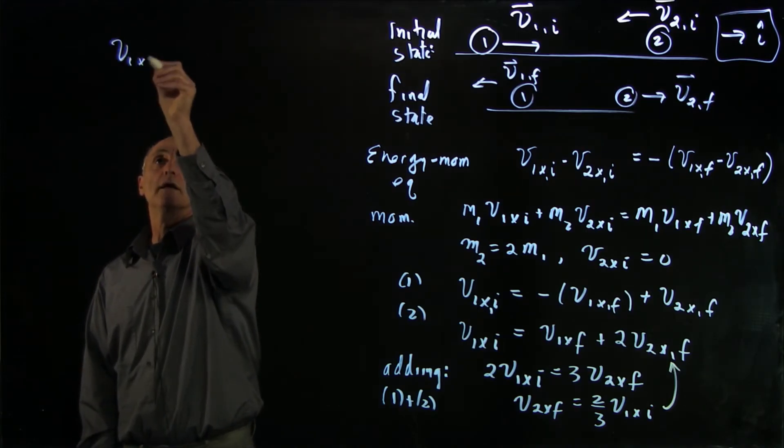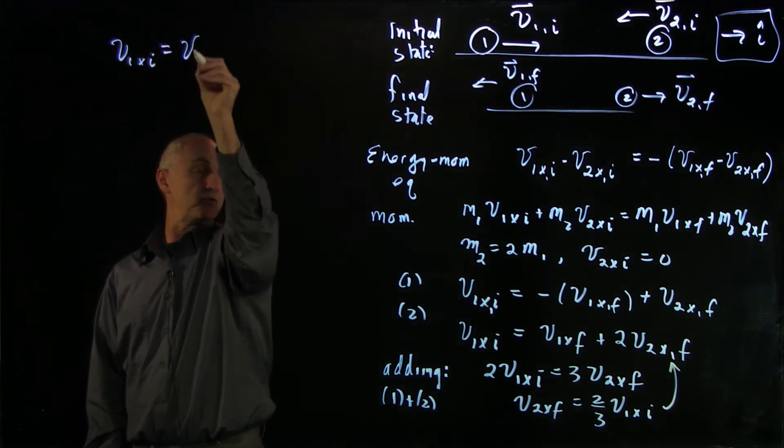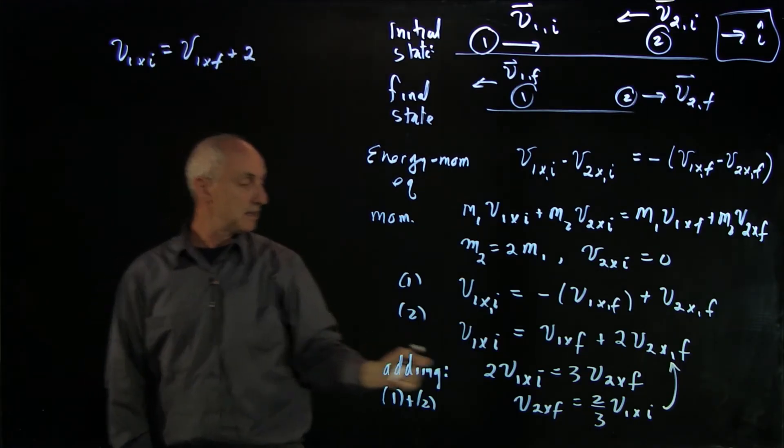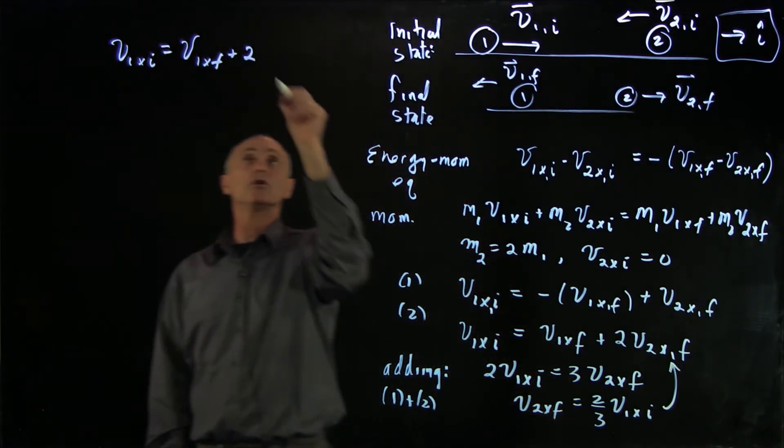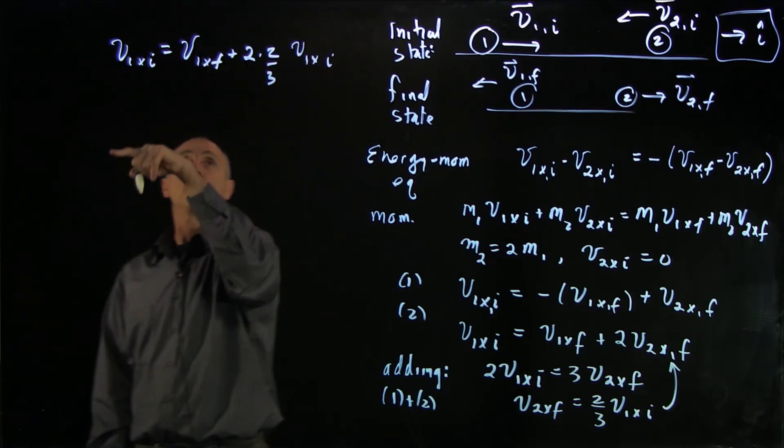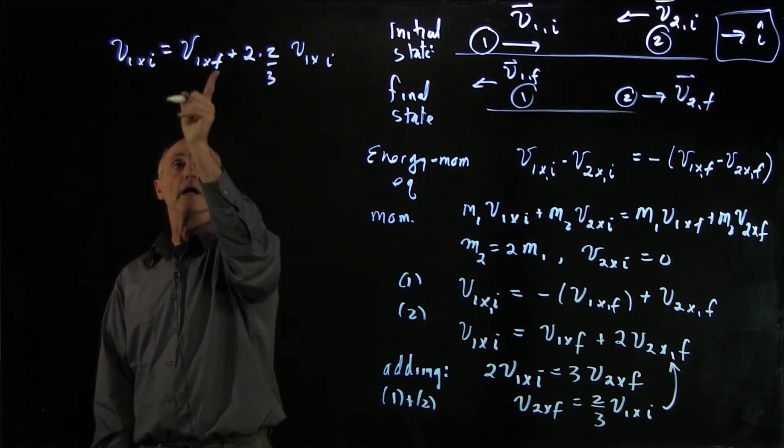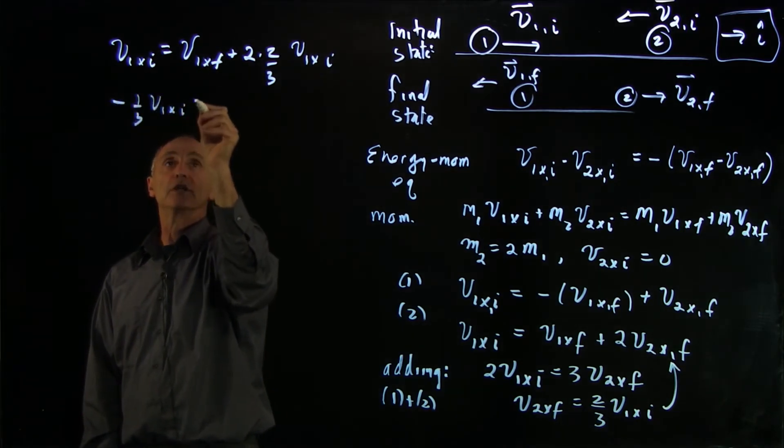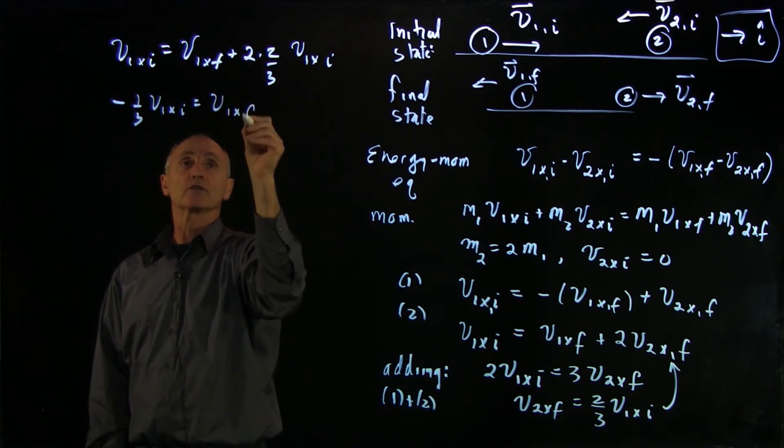And we get v1 x initial equals v1 x final plus 2 times 2 thirds v1 x initial. So when we bring that over to the other side, 1 minus 4 thirds is minus 1 third v1 x initial equals v1 x final.